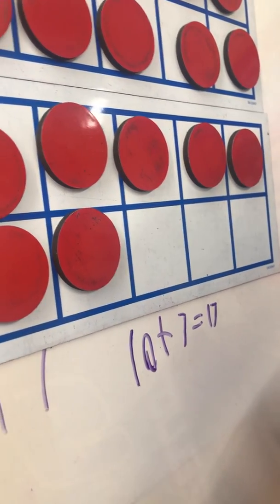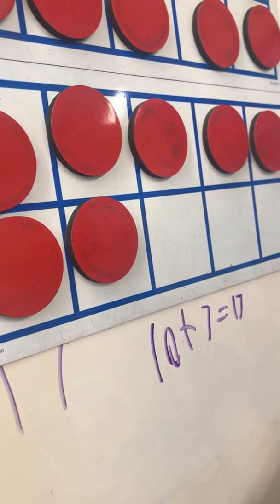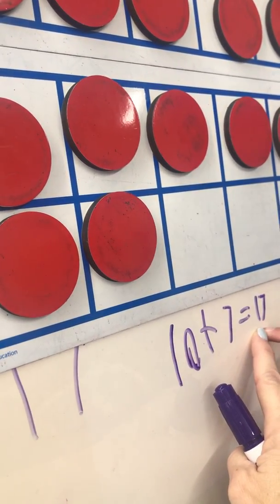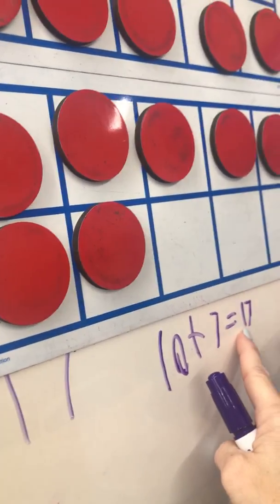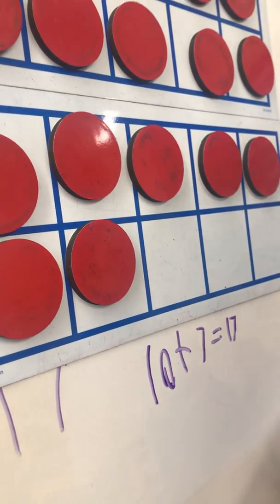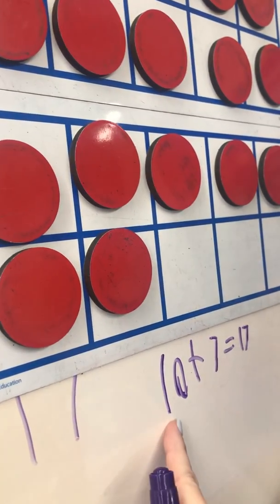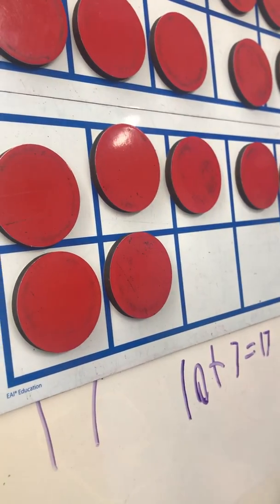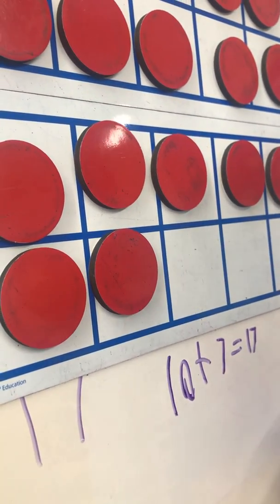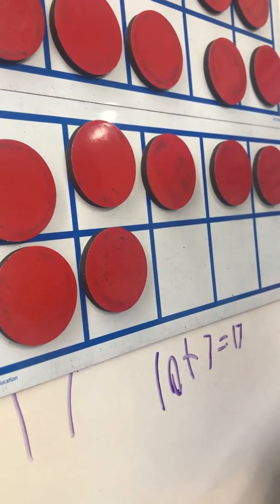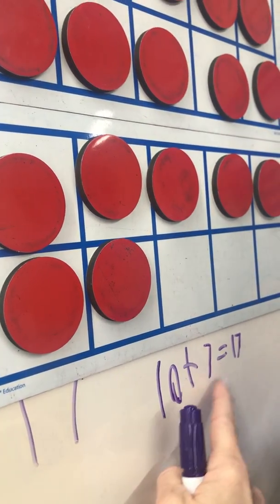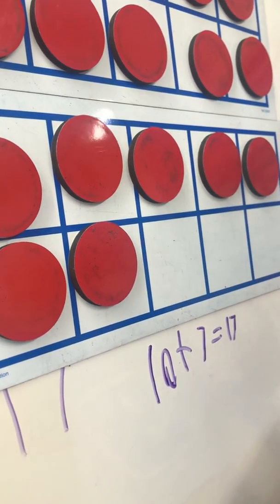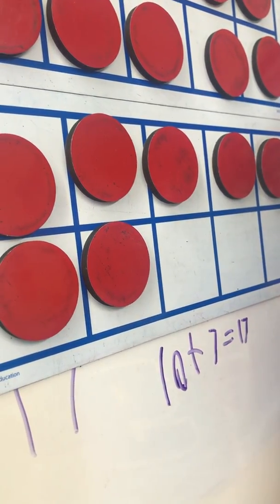I counted. Okay, but what do you know about these numbers? That's the tens place. And so, if there's a one in the tens place, you knew it was ten. So that's where you got your ten. And what about that number? It's in the ones place. And so, you knew that that number is just one. So that's how you got this number. Read that equation to me. Ten plus seven equals 17.